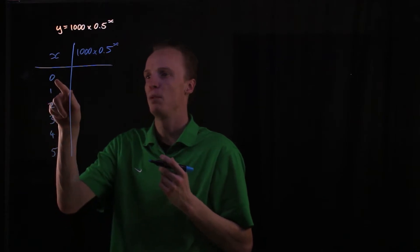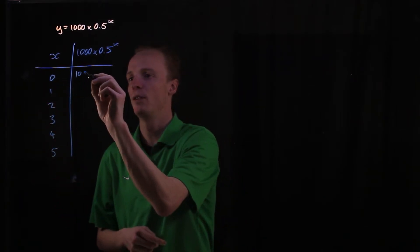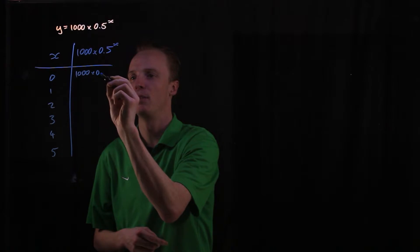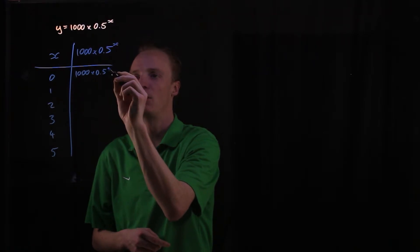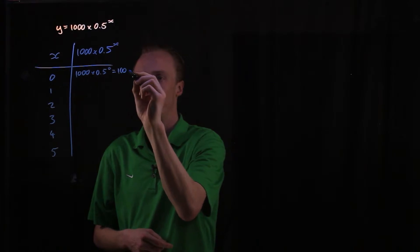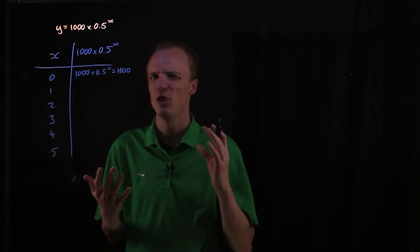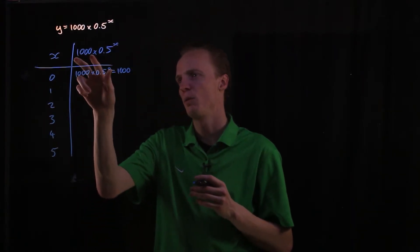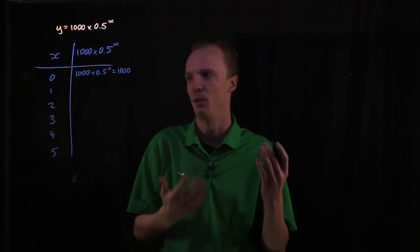So if we put input 0 here we'll have 1000 multiplied by 0.5 to the power of 0, which will be just that 1000. And what we're actually going to be doing here is we're going to be multiplying by 0.5 every single time.